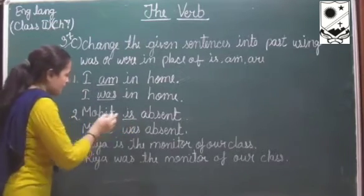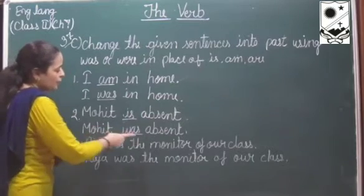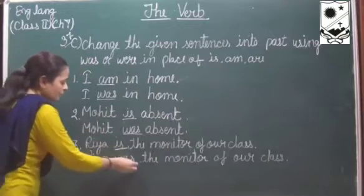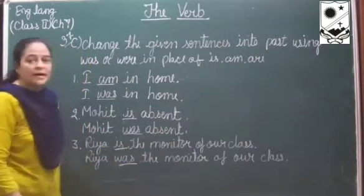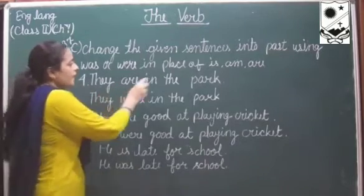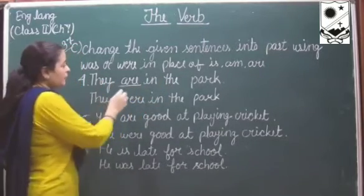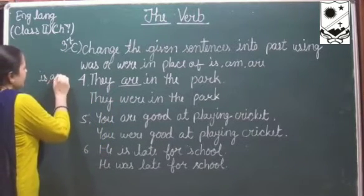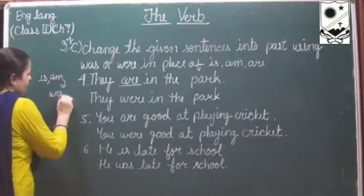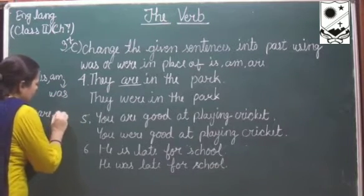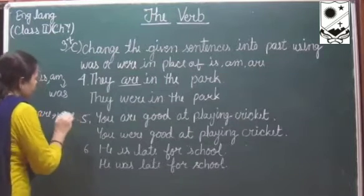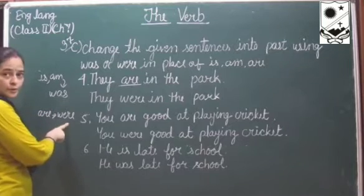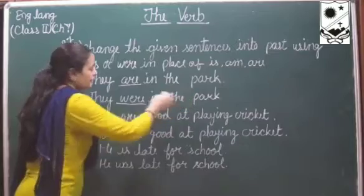Next: Mohit is absent - we use was, so Mohit was absent. Rhea is the monitor of our class - we use was, so Rhea was the monitor of our class. Next: they are in the car - we replace are with were, so they were in the car. In place of is and am we use was, and in place of are we use were.